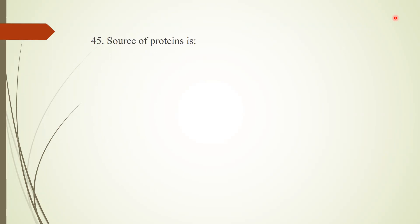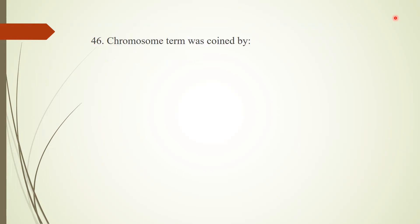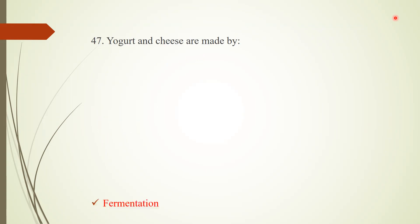Question 44: Chromosomal theory was proposed by? Answer: Sutton and Boveri. Question 45: Source of protein? All options — meat, eggs, and legumes — are all sources of proteins. Question 46: The term 'chromosome' was coined by W. Waldeyer. Question 47: Yogurt and cheese are made by the process of fermentation.